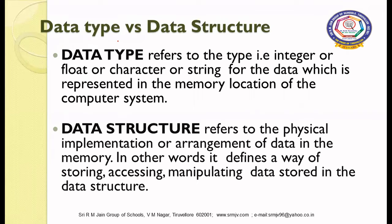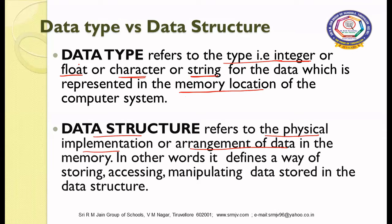Data type refers to the type of data — it may be integer, float, character, or string — that is represented in the memory location of a computer. Data structure, on the other hand, refers to the physical implementation or the arrangement of data. So a data type is what type of data we are going to store in memory, and data structure is how we arrange that data in memory.